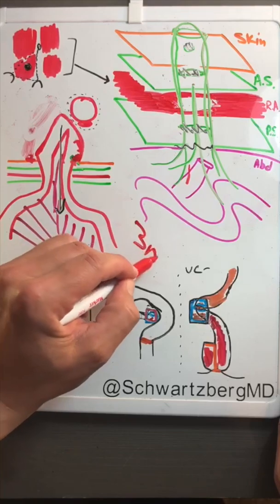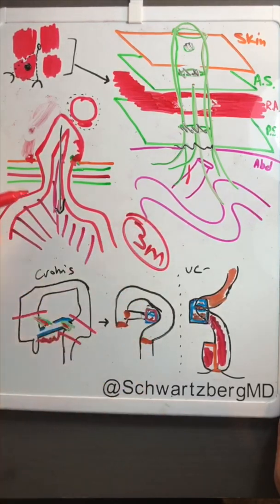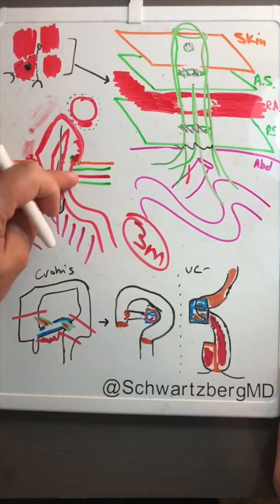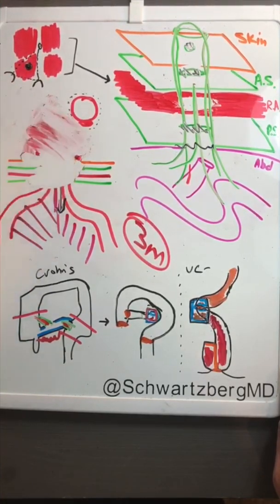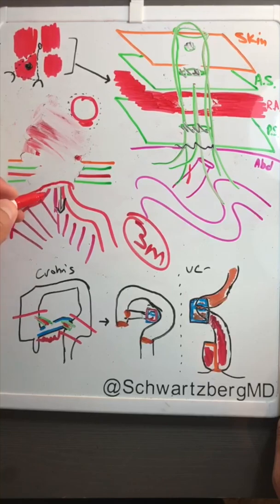And then usually three months later is when you do the reversal operation. Put everything back in. This all becomes closed. Here's the loop of intestine here.